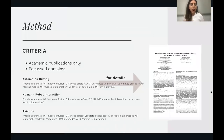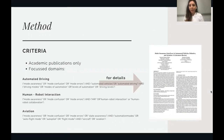So our search criteria: we only included academic publications. We focused on three domains — automated driving, human-robot interaction, and aviation. We had certain search terms for each domain, but I will not give details about this now. If you're interested in all the details, you can find it in our paper.